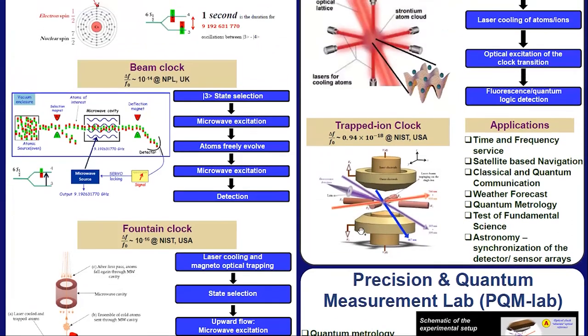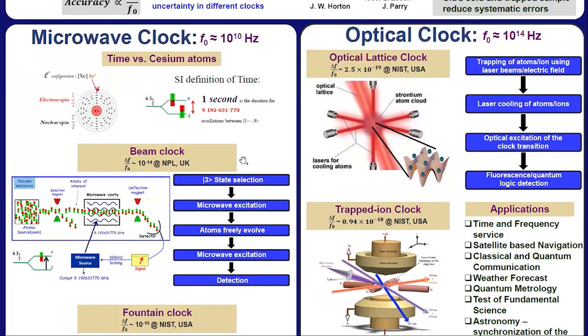If we want a better clock, we have to choose the transition frequency which is higher as compared to microwave clock, say in optical region, which is of the order of 10 to the power of 14 hertz. So there are two different types of optical clock. First one is lattice clock and other is trapped ion clock.